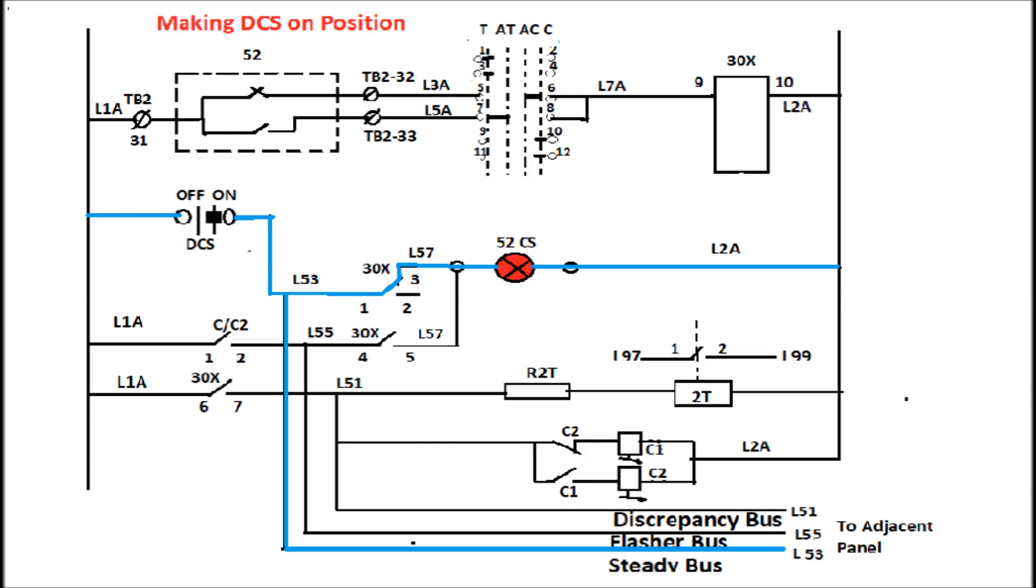That means for 132 kV system, if it had two numbers of transformer, HP panel, one number of bus transfer panel, two number of feeder panel, by making DCS in on position, it will make lamp of all 52 CS or discrepancy switches of all five panels glow.